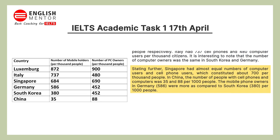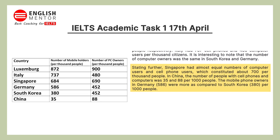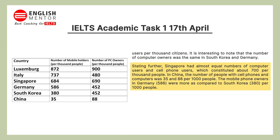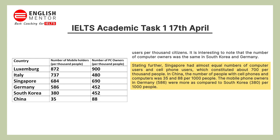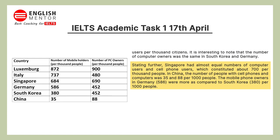In the last paragraph you can write: Singapore had almost equal number of computer users and cell phone users, which constituted about 700 per thousand people. In China, the number of people with cell phones and computers was 35 and 88 per thousand people. The mobile phone owners in Germany were more as compared to South Korea per thousand people. Here you can also write the data, like 586 or 380.